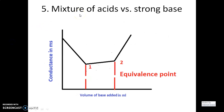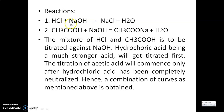The fifth type is mixture of acids versus strong base. The example uses HCl and acetic acid titrated against NaOH. The first reaction is HCl plus NaOH gives sodium chloride and water. The second reaction is acetic acid plus sodium hydroxide gives sodium acetate and water. Hydrochloric acid, being a much stronger acid, will get titrated first. The titration of acetic acid commences only after the hydrochloric acid has been completely neutralized. Hence, a combination of curves is obtained.